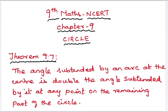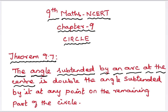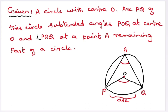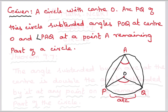Let's first make the statement clear. The angle subtended by an arc at the center — that is, it is given that an arc PQ of a circle subtends angle POQ at the center O. Here, subtended angle means an angle created when two lines meet at a point. That is, POQ is the subtending angle.